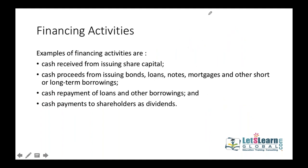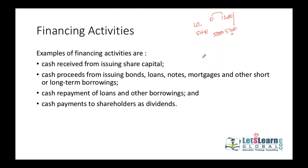For financing activities, concentrate on long-term liabilities and shareholders' equity. If a bank loan increases from zero to 1.2 million, cash also increases — a cash inflow. If share capital increases from 5 million to 5.3 million, we issued shares worth 300,000 — also an inflow. Treasury stock repurchases are outflows. When long-term liabilities or equity increase it is an inflow; when they decrease it is an outflow. Cash payments of dividends to shareholders also go to financing activities.